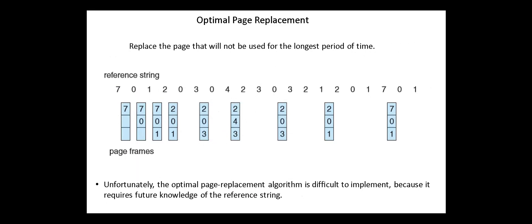The next page replacement algorithm is the optimal page replacement. Here we replace the page that will not be used for the longest period of time. So after bringing these pages, now for page 2, the page that will not be used for the longest period of time from pages 7, 0, and 1 is page 7. So it's selected as a victim and page 2 is brought in.